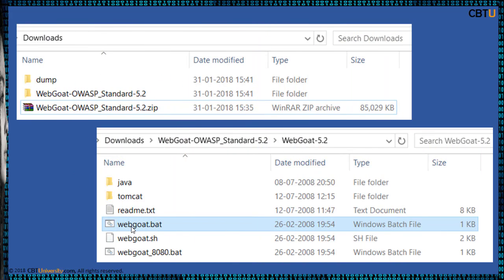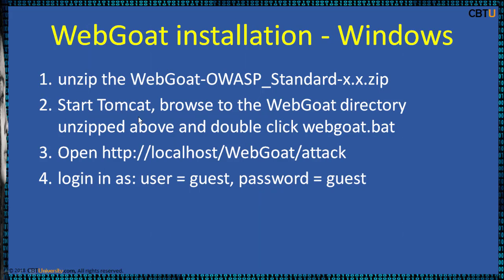This is Webgoat installation on Windows. Extract the downloaded file. Inside the Webgoat directory, you have webgoat.bat. Double-click on this batch file — this runs the Tomcat server. We have unzipped the files and started Tomcat by double-clicking webgoat.bat. Now in the browser, open localhost/webgoat/attack and login with guest/guest as username and password.